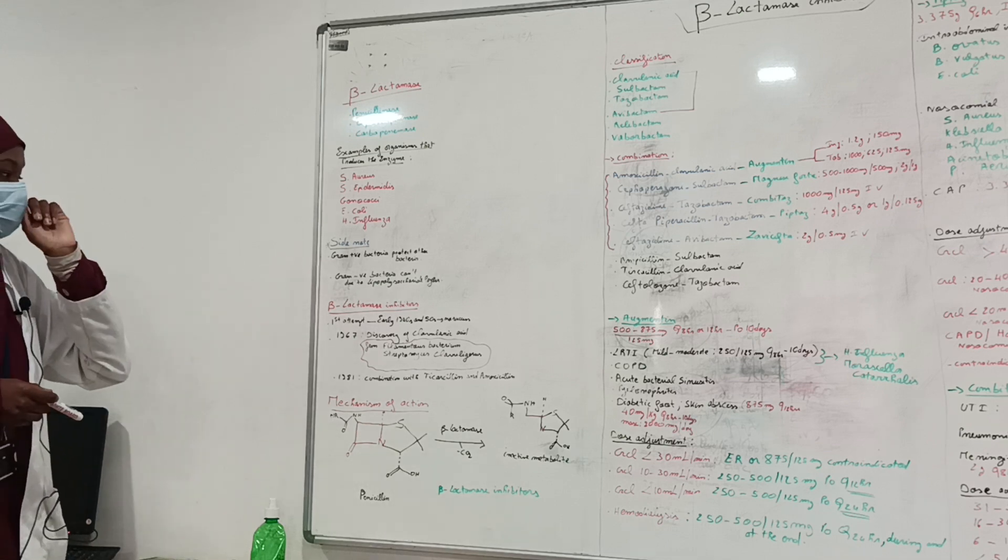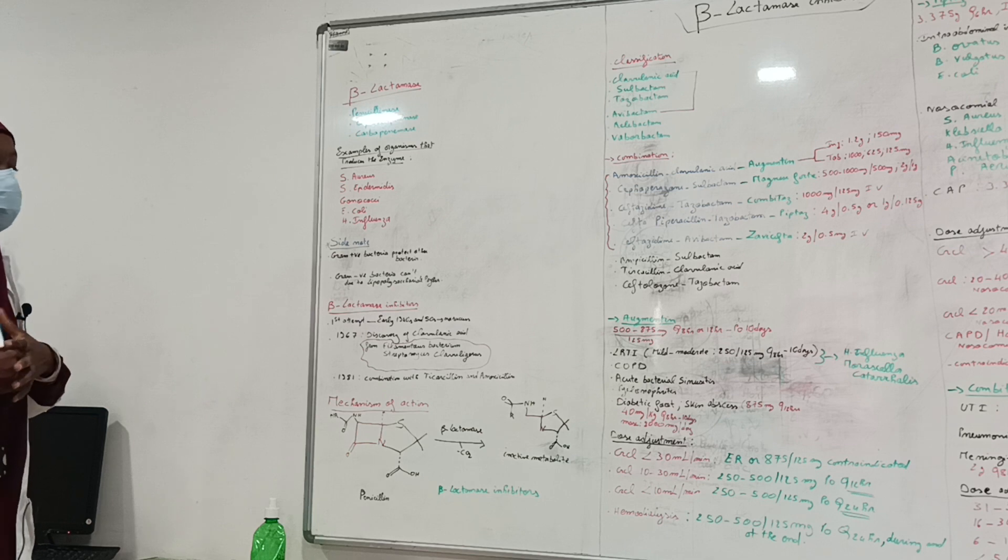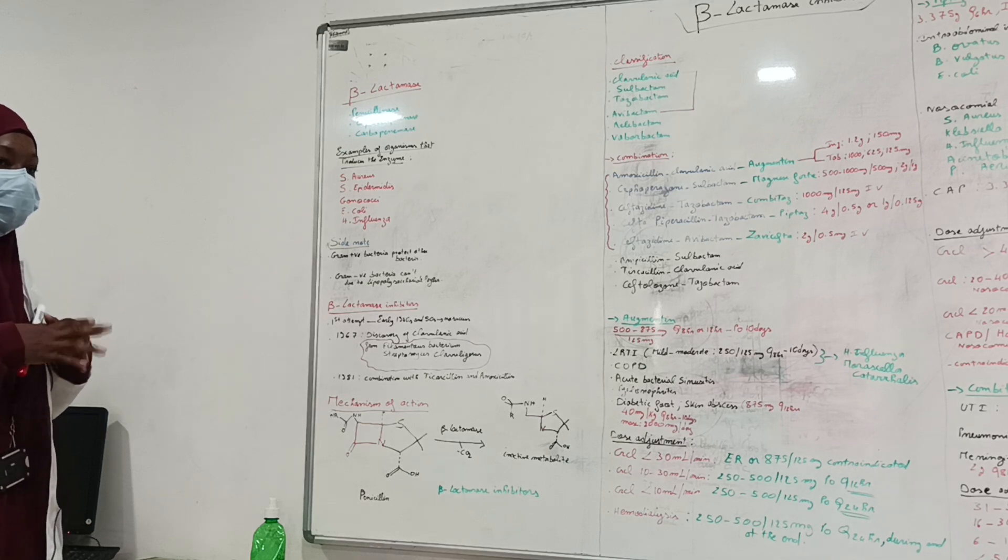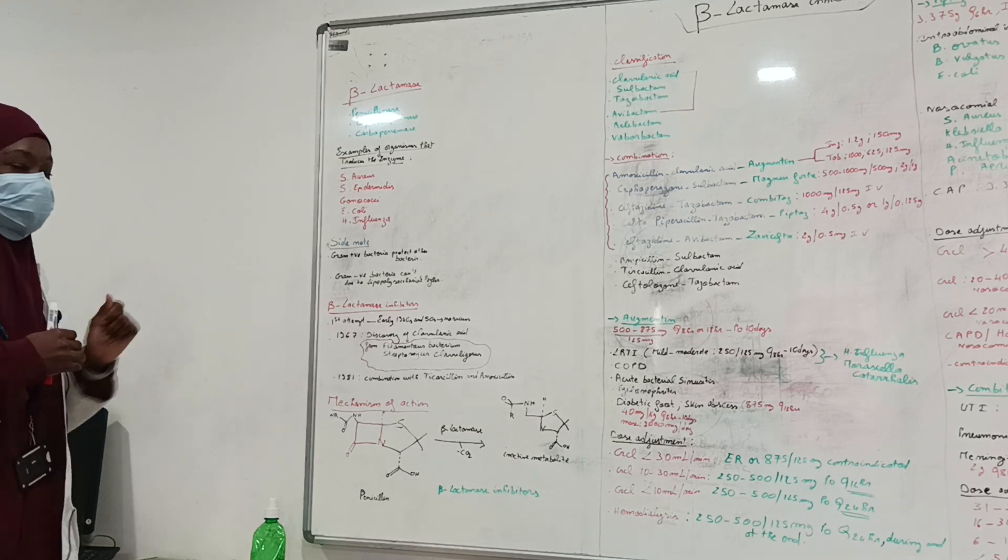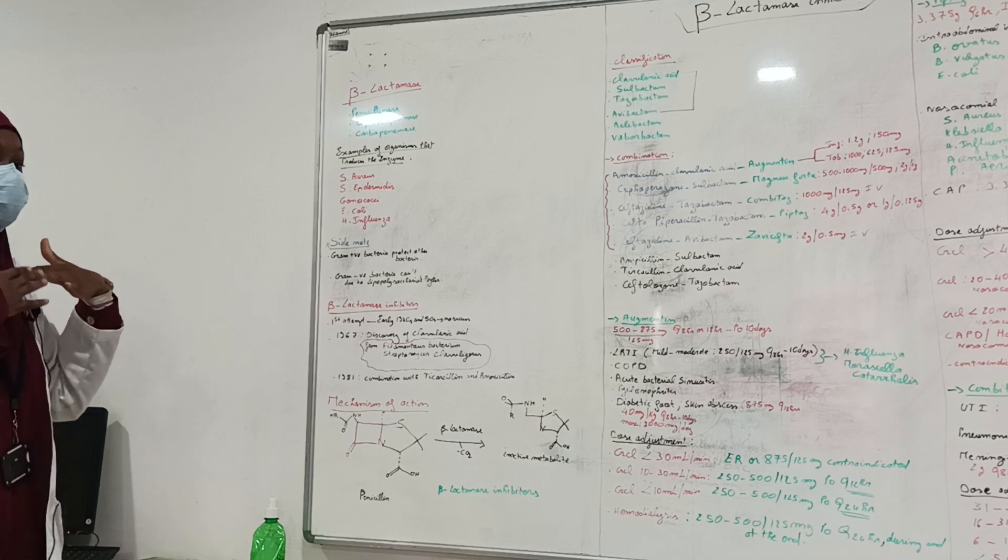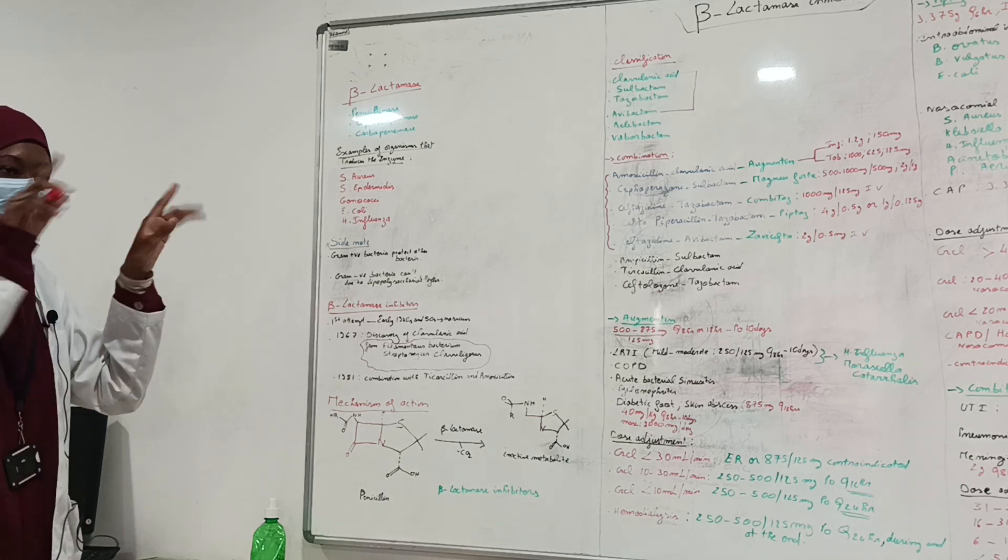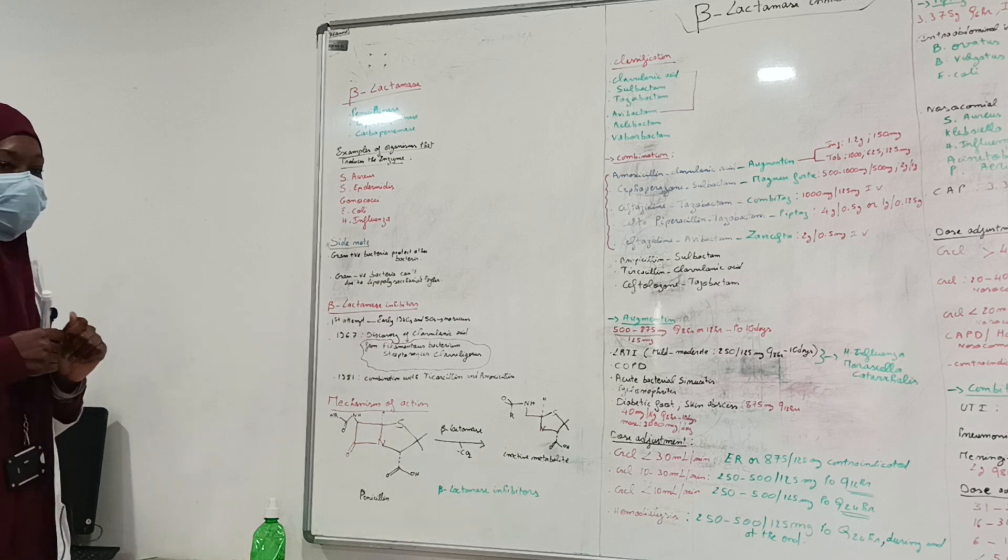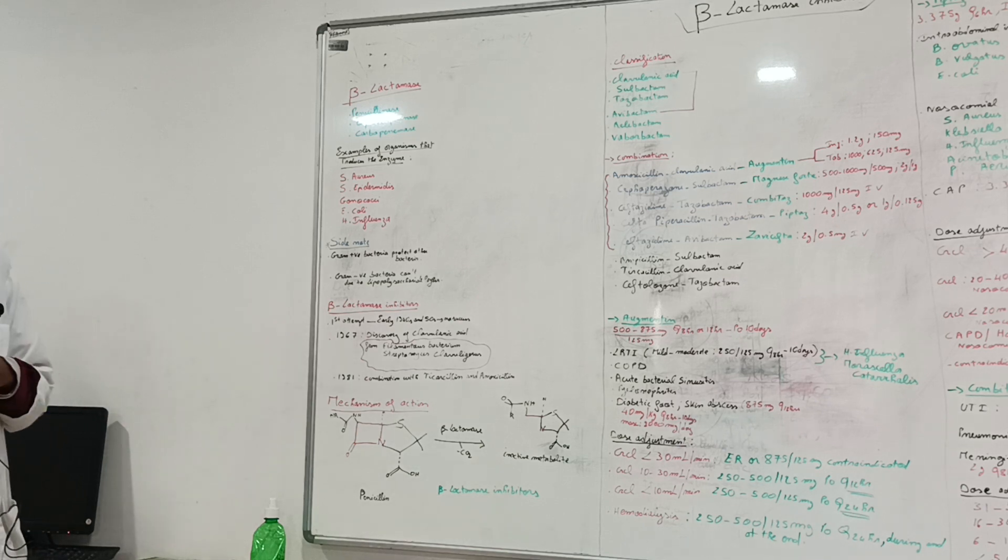As a side note, gram-positive bacteria don't have lipopolysaccharide layers. So when they release beta-lactamase enzymes, this enzyme diffuses out and also protects other bacteria in the surrounding. But gram-negative bacteria can't do this due to the lipopolysaccharides.